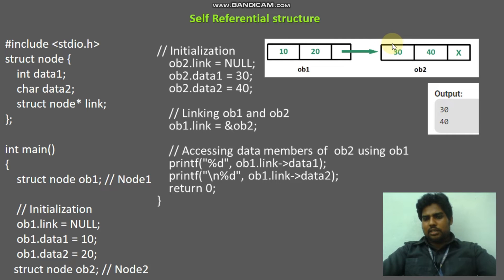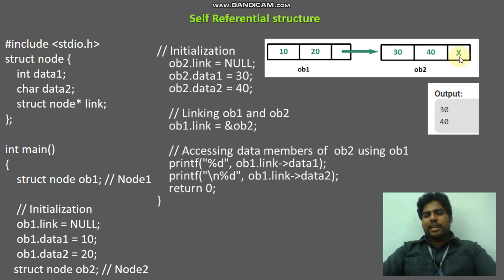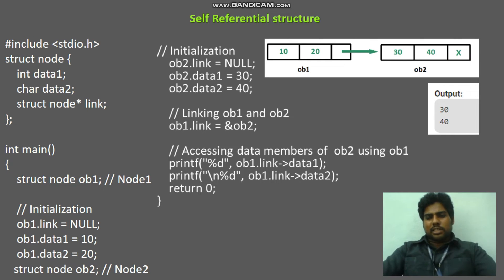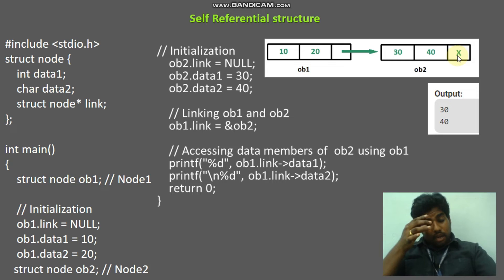And this X denotes null. Null means empty. From there, the linked list got ended. So, linked list is nothing but like that — many nodes are there, interconnected with links. At the end of the linked list, there is an X symbol. That is, we can say it is null.